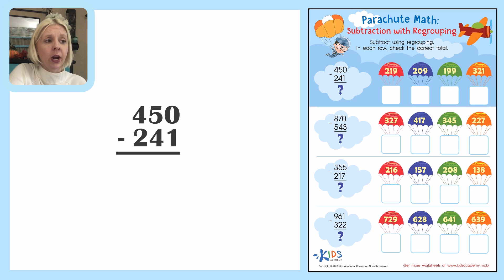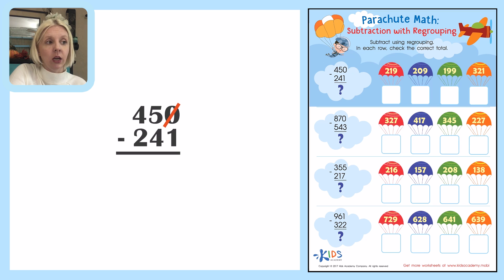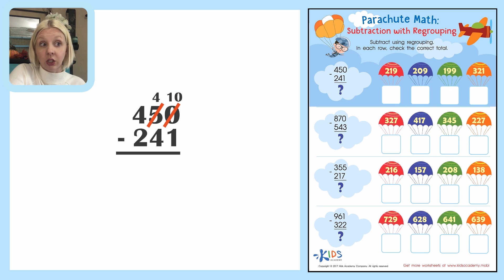I'm going to start in the ones place. I need to take one away from zero — well, I can't do that, so this is where I need to regroup. I'm going to turn this into a ten by adding ten to it, so that's just going to be ten. But I can only do that if I take away from the tens place, so the five is going to be changed into a four.